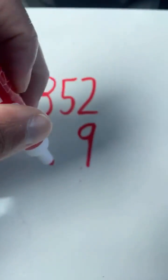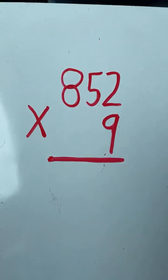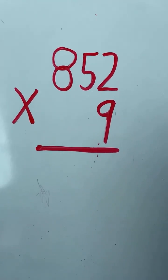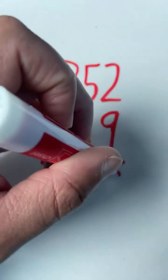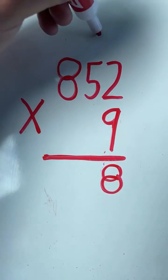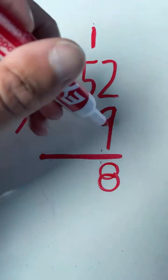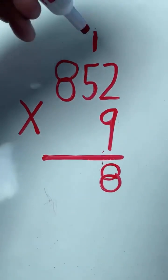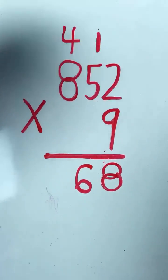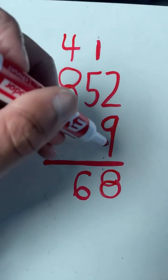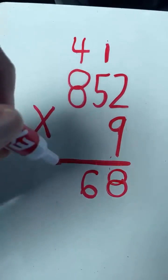2 times 9. So we start in the 1's place. 2 times 9 equals 18. Write the 8, carry the 1. 5 times 9 equals 45, plus 1 equals 46. Write the 6, carry the 4. 8 times 9 equals 72, plus 4 equals 76.